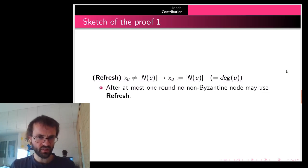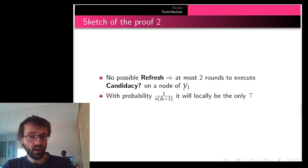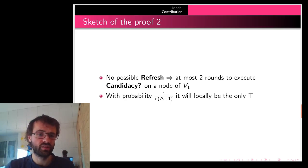Here's a sketch of the proof. First, we observe that after at most one round, every non-Byzantine node displays its own degree. Then we observe that after at least two rounds, we execute a candidacy on a node of V1, which makes the algorithm progress with non-zero probability, specifically 1 over e times delta plus 1.